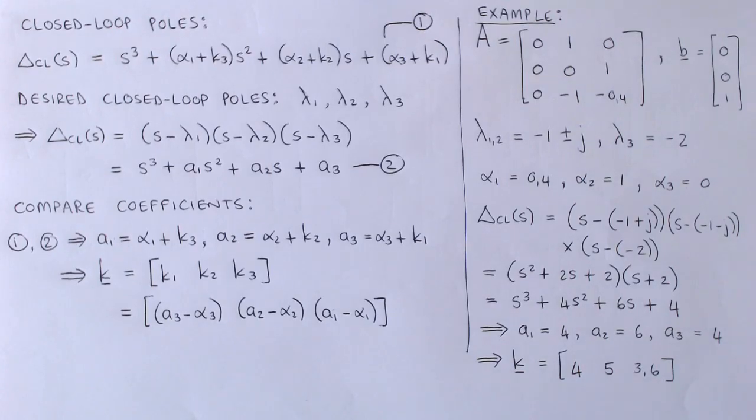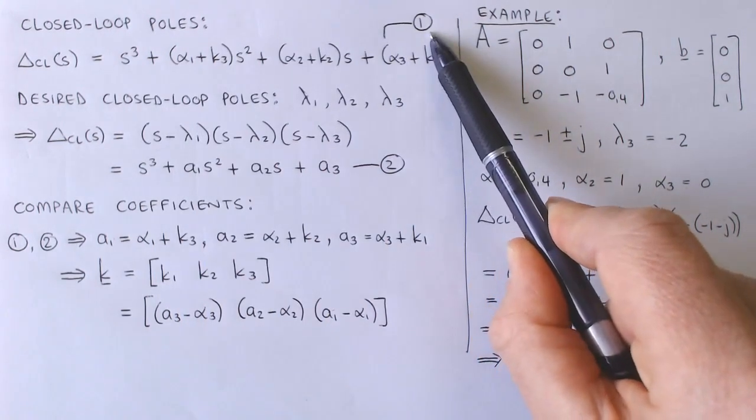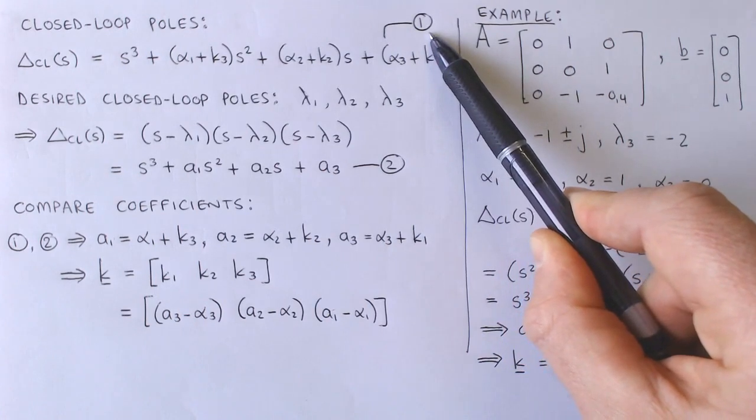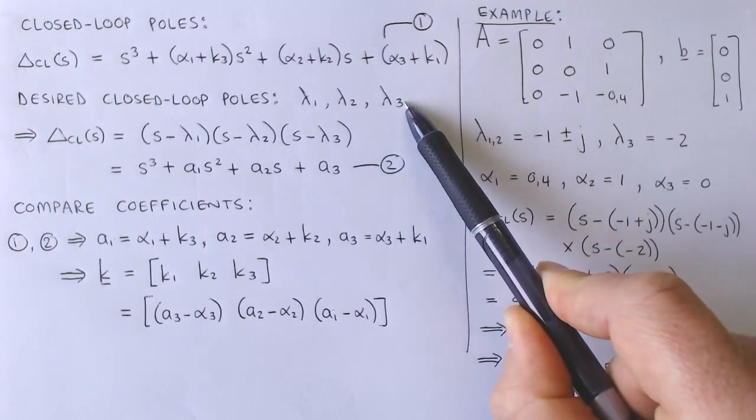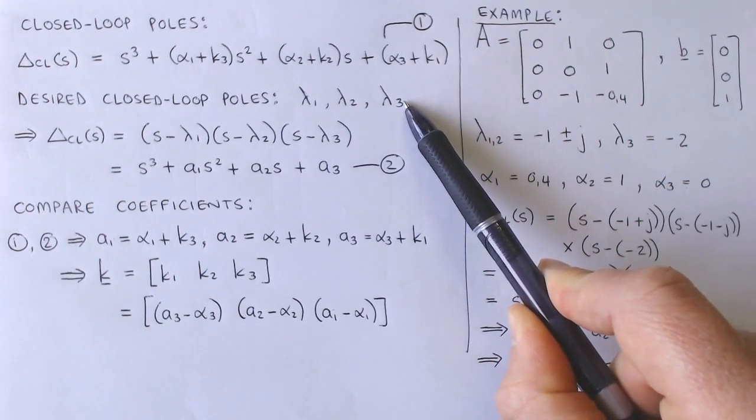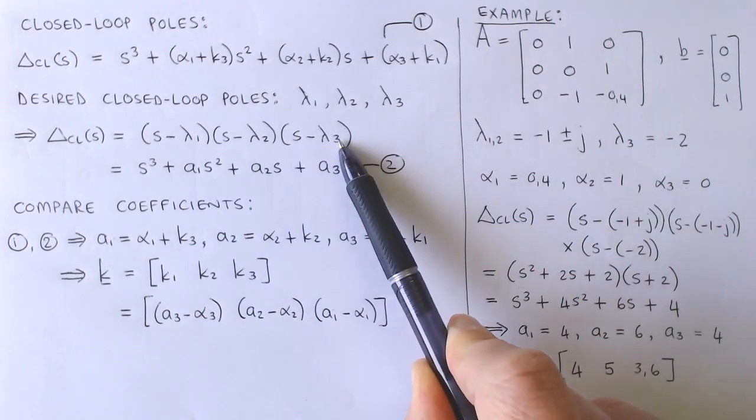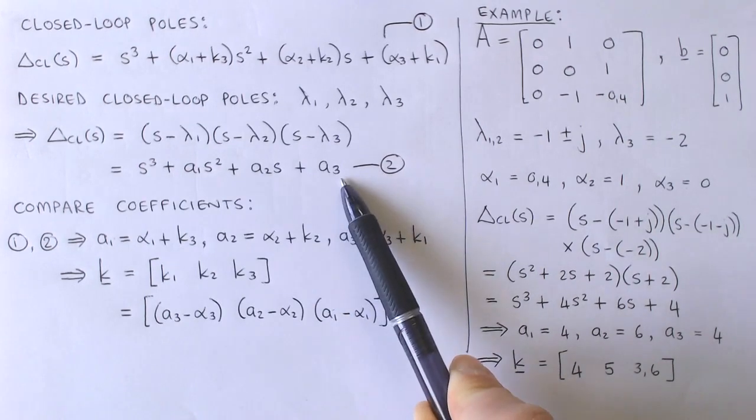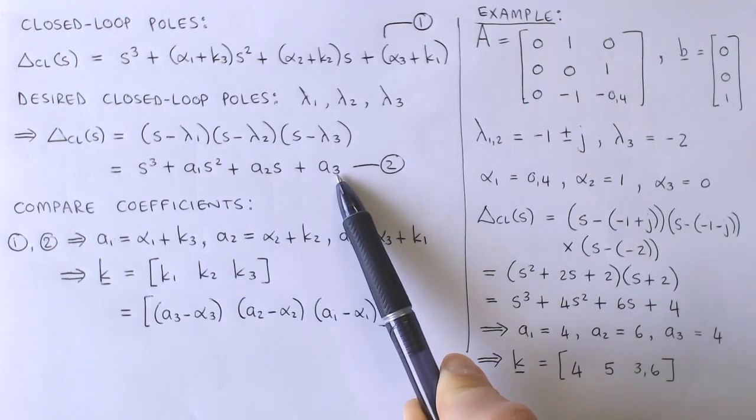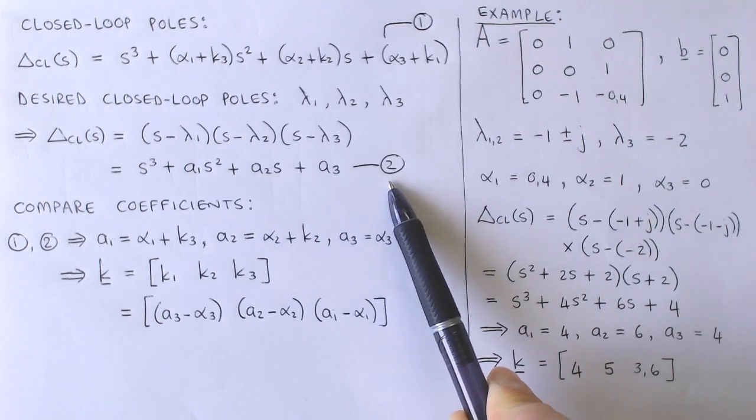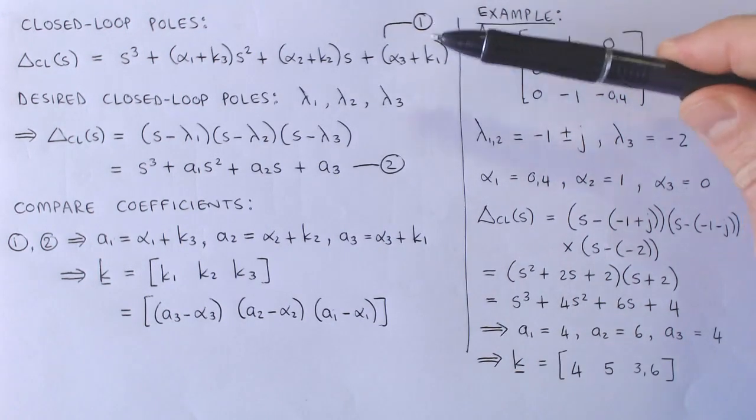The characteristic polynomial of the regulator is rewritten here, which we label as equation 1. Suppose the desired regulator poles are given by lambda 1, lambda 2, and lambda 3, then the desired characteristic polynomial is the product of S minus each lambda, resulting in this characteristic polynomial, where the coefficients A1, A2, and A3 are functions of the lambdas.